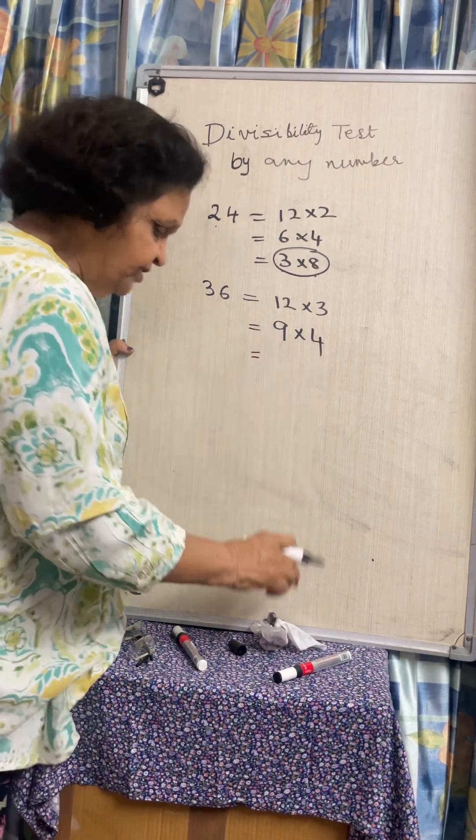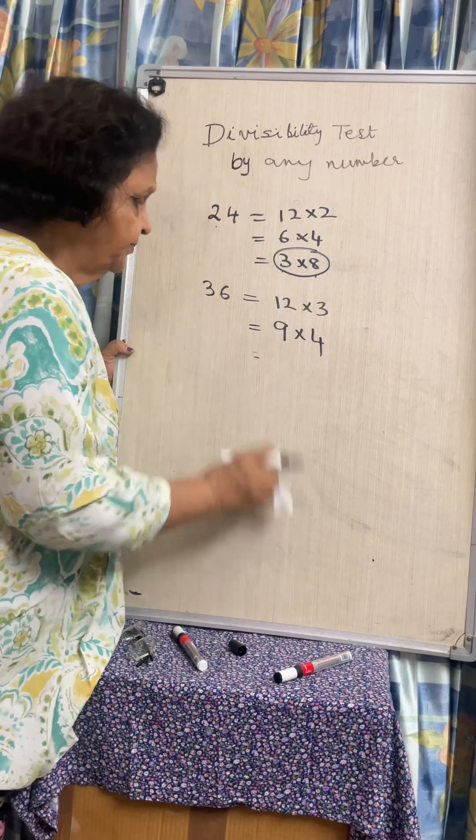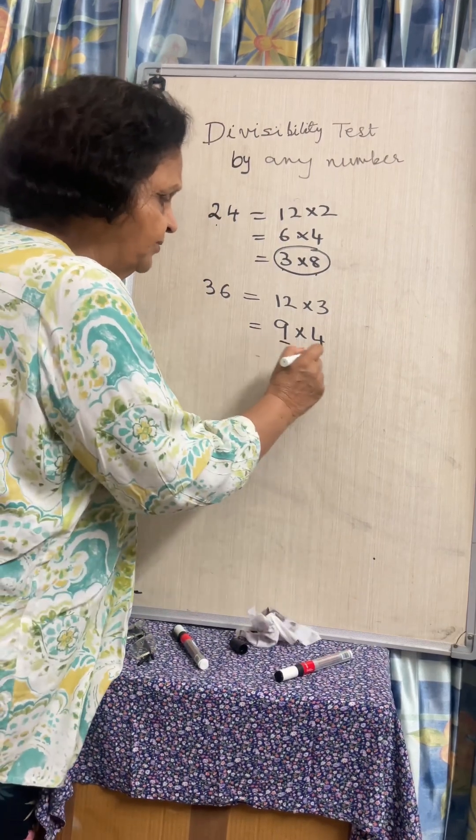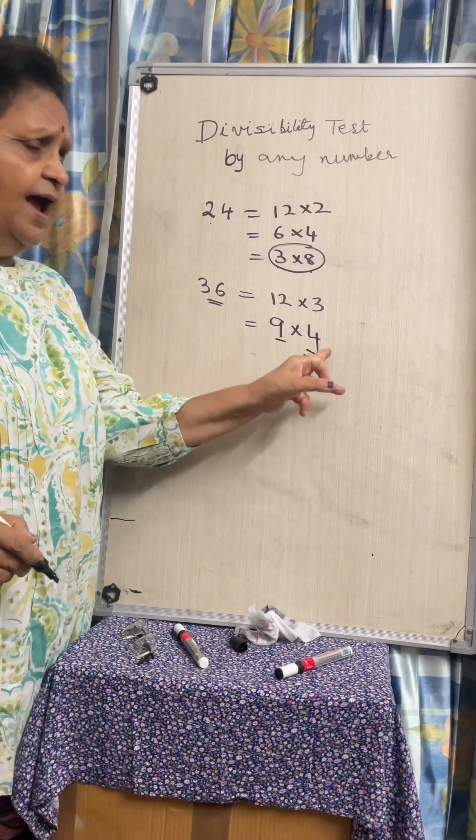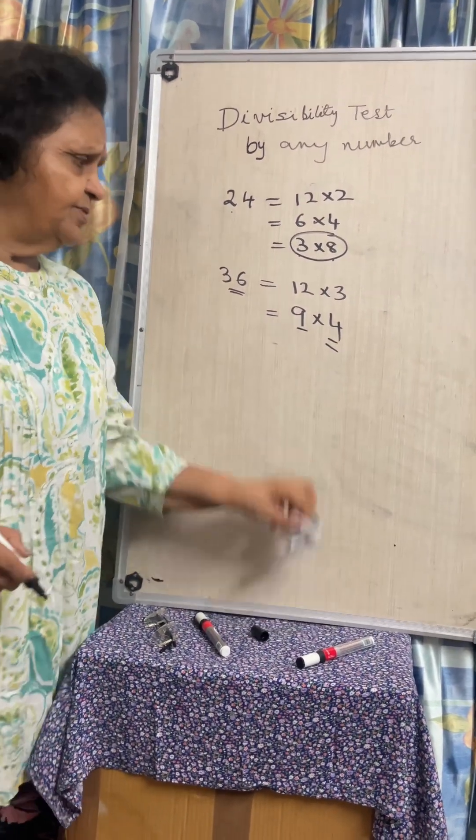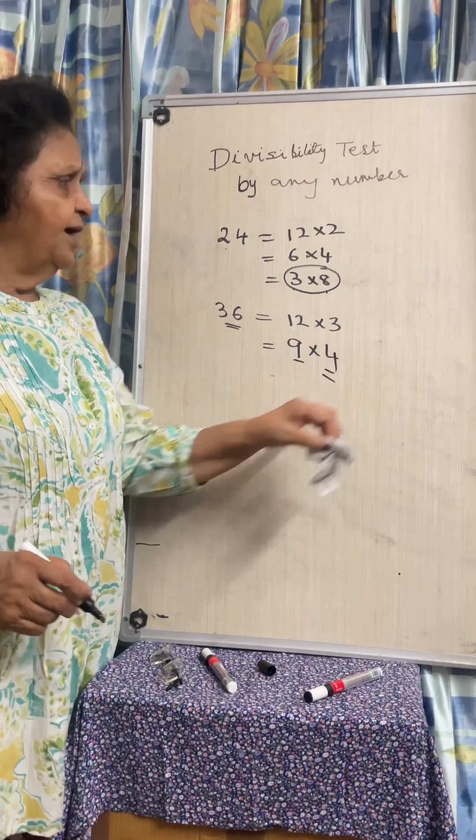And so which are the ones which are co-prime? 9 and 4. So a number will be divisible by 36 if it is divisible by 9 and 4. And you know the divisibility tests of 9 and 4.